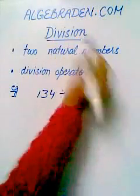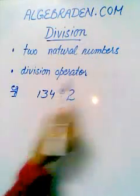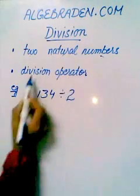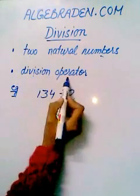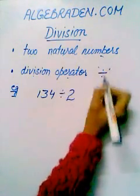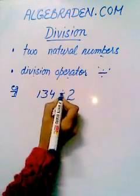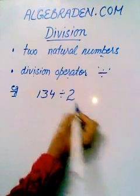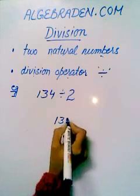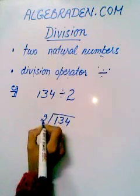Division. For division of natural numbers, we need two natural numbers and a division operator, which is written as this sign. For example, 134 divided by 2.